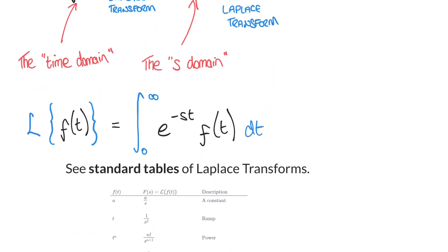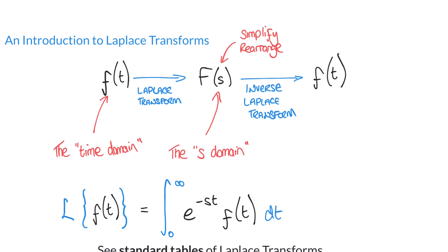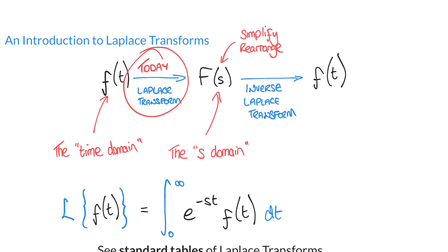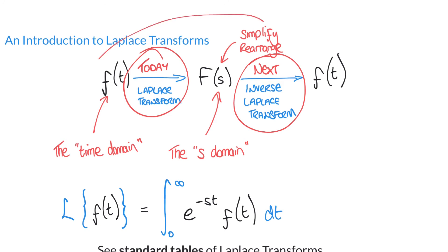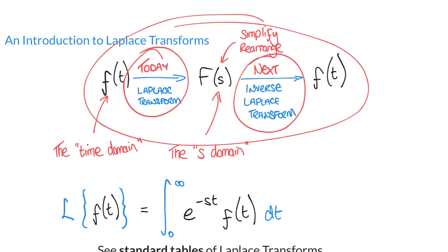For our purposes, we're not really going to get bogged down with the theory of what s is exactly, because as we'll see in later videos, we're going to convert to the s domain, perform some rearrangements and simplification, and then convert back to the time domain again. We can think of s as just being a temporary or placeholder term that we use to our advantage. In this particular video, we're only going to focus on the Laplace transform from the time domain to the s domain. In our next video, we're going to look at the inverse transform, moving from the s domain back to the time domain. Then in subsequent videos, we'll put those two together to show how we can use that to solve first and second order differential equations.